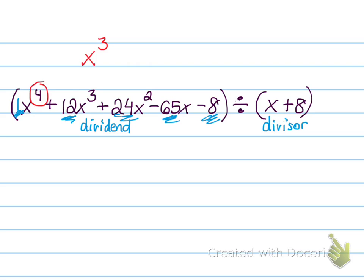One less than 4 is 3. So when you write in your variables after your numbers in your solution, you're going to start with x to the power of 3, count down to x to the power of 2, count down to x to the power of 1, and then of course no variable because that'll be your constant.